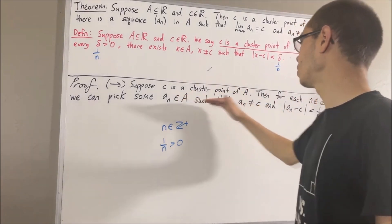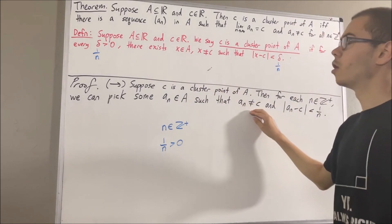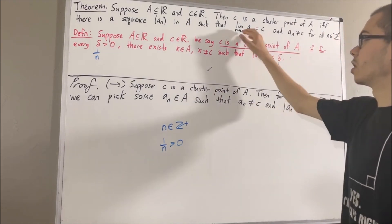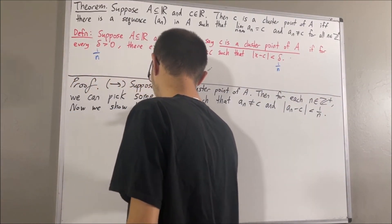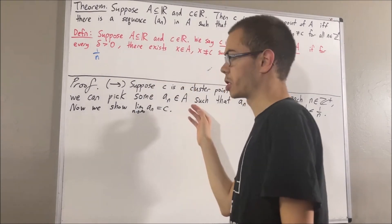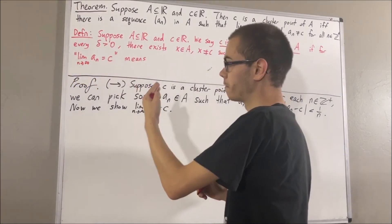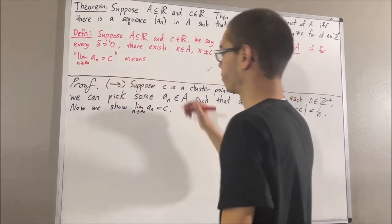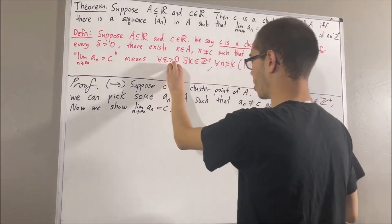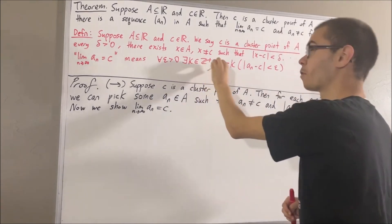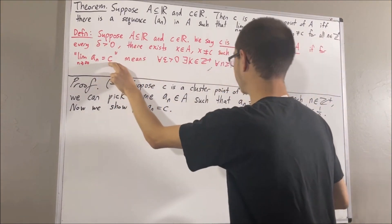Now we already know that our sequence satisfies the property that A sub n is not equal to C, because that's how we've defined the sequence. All we have to do now is show that the limit of our sequence is equal to C, and we're going to show this from the definition of the limit of a sequence. That means: for every epsilon greater than 0, there exists a positive integer k such that for all positive integers n greater than or equal to k, the absolute value of An minus C is less than epsilon.